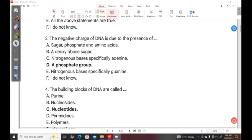Question three. The negative charge of DNA is due to the presence of A. Sugar phosphate and amino acid. B. Deoxyribose sugar. C. A nitrogenous base, specifically adenine. D. A phosphate group. E. Nitrogenous base, specifically guanine. F. I do not know. So when you look at the DNA structure, I'll quickly go to the drawing board.